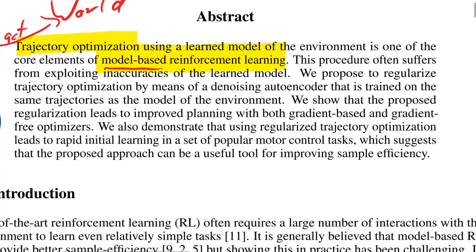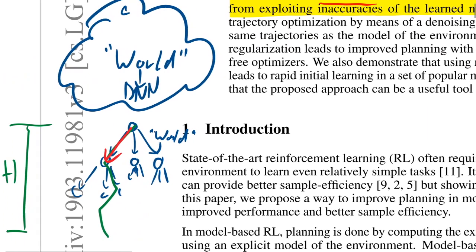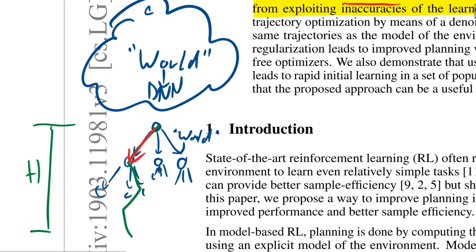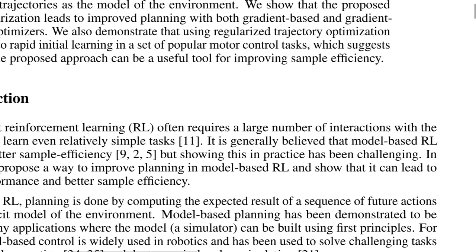These authors say this procedure often suffers from exploiting inaccuracies of the learned model. If the world model is not accurate, the optimizer trying to find the best path against this world model can lead to devastating consequences.